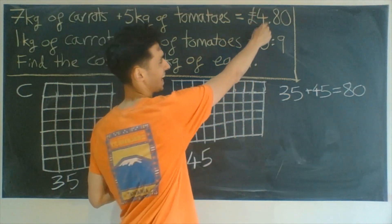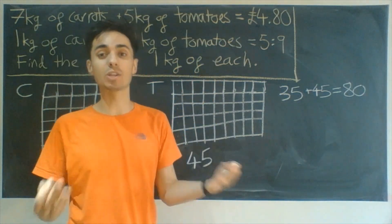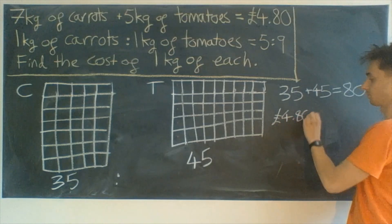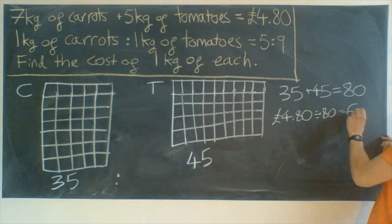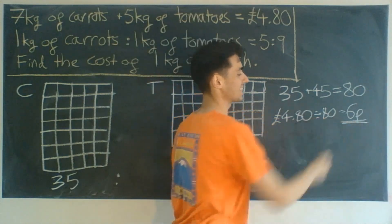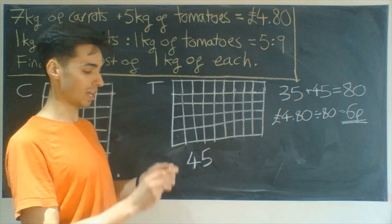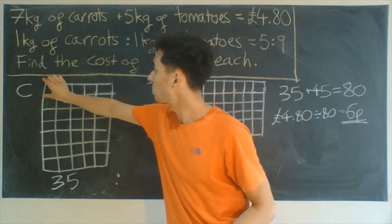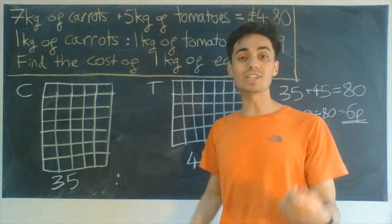So what we need to think is: if 80 squares give us £4.80, what would one square give us? We need to do £4.80 divided by 80 to find the value of one square. I'm just changing my units from pounds to pence because it makes a bit more sense. £4.80 divided by 80 is 6 pence. That tells us each of these one squares represents 6 pence.